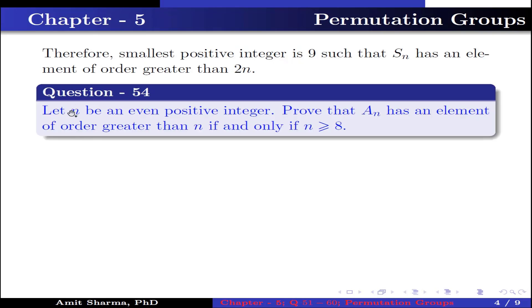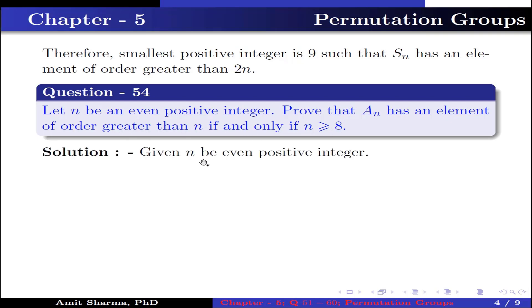Question number 54. Let n be an even positive integer. Prove that An has an element of order greater than n if and only if n = 8. Given n is an even positive integer. The product of the permutation (1 2 3 4 5)(6 7 8) belongs to A8 and A10.